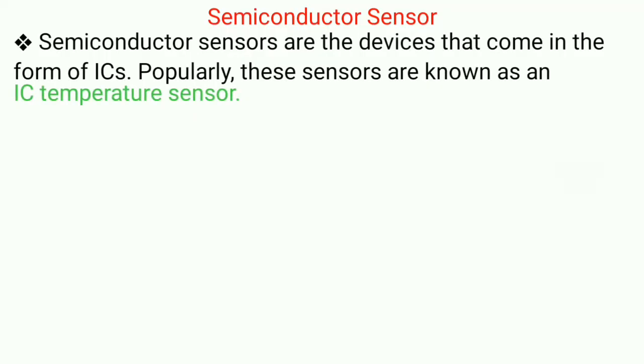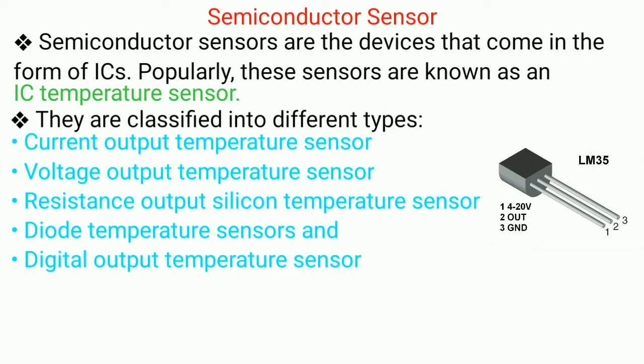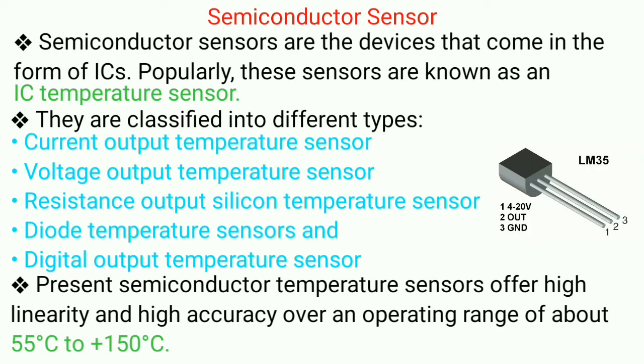The last sensor in this category is semiconductor sensors. These sensors are also known as IC temperature sensors as they come in the form of ICs that is integrated circuits. Depending upon different types of outputs, they are classified into 5 types: current output temperature sensors, voltage output temperature sensors, resistance output temperature sensors, diode temperature sensors, and digital output temperature sensors. Accuracy and linearity are the two static characteristics and these sensors offer high linearity and accuracy over the operating range of 55 degree centigrade to 150 degree centigrade.